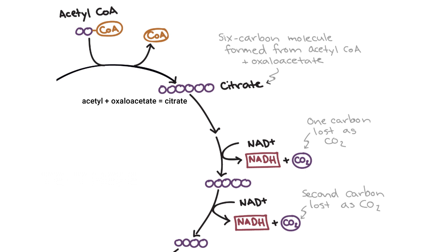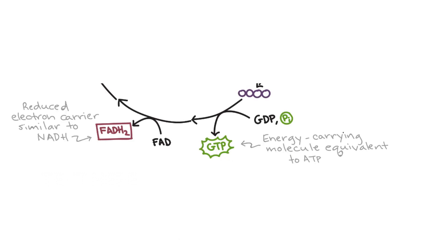Citrate then releases two of its carbons in the form of two carbon dioxide molecules, which also, like in pyruvate oxidation, causes two NAD plus molecules to become NADH each time due to the oxidization. The four-carbon molecule then creates ATP, or sometimes GTP. Remember that GTP is a molecule similar to ATP in that they are both energy carriers, and then the four-carbon molecule turns FAD into FADH2, which is a different electron carrier, similar to NADH.